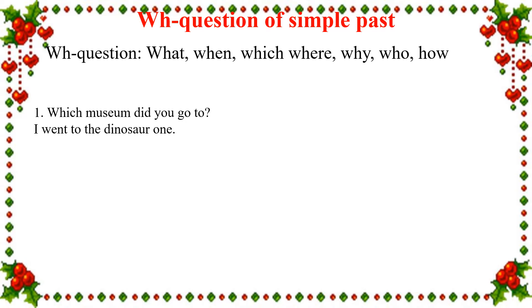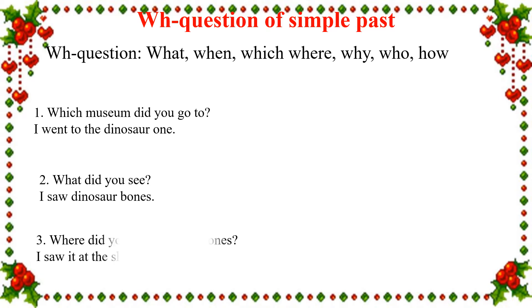Example 1: Which museum did you go to? I went to the Dinosaur One. Example 2: What did you see? I saw dinosaur bones. Example 3: Where did you see dinosaur bones? I saw it at the showroom.